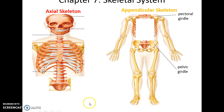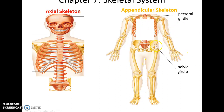There are 206 bones in the body. They are divided into the axial skeleton, which includes all the bones that run along the midline, and the appendicular skeleton, which includes the bones of the limbs and the structures that attach the limbs to the axial skeleton.